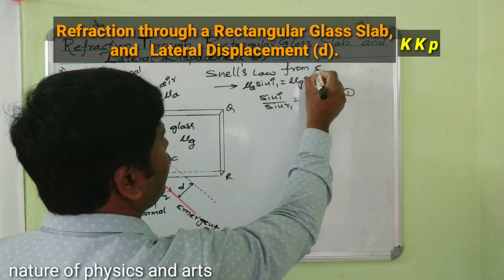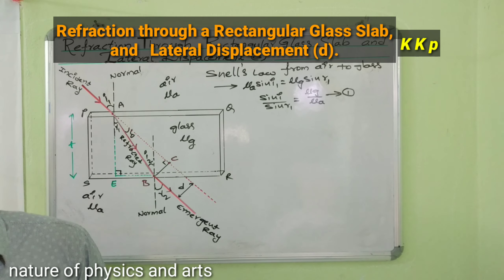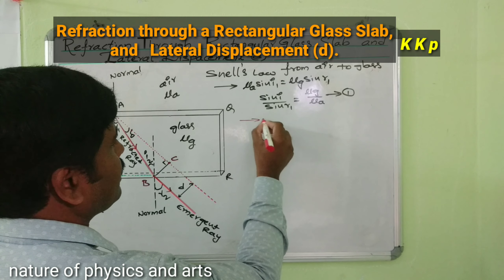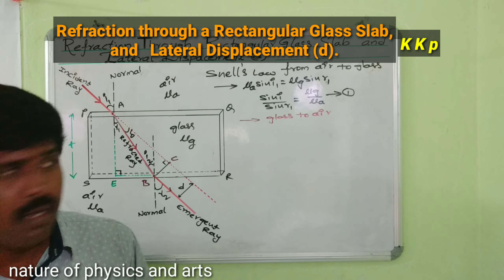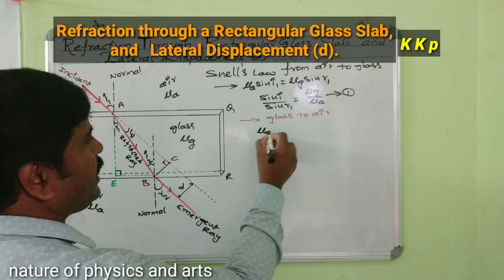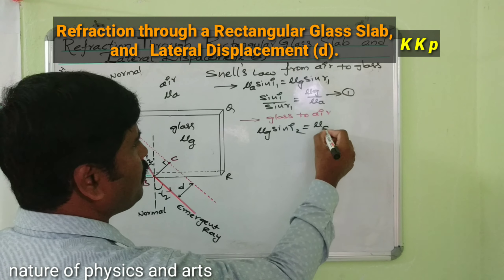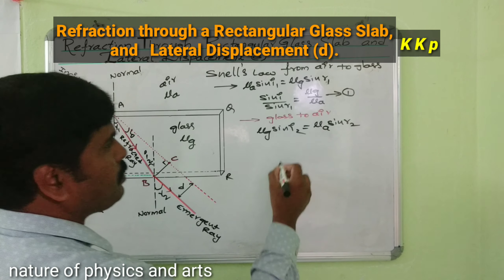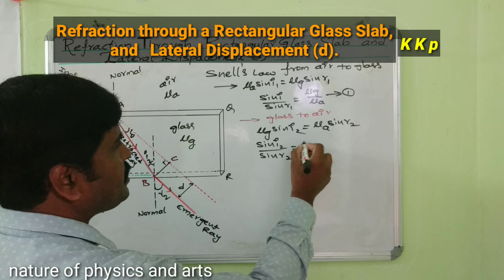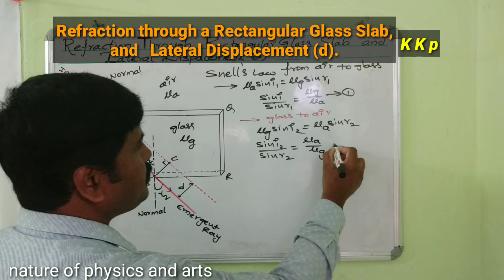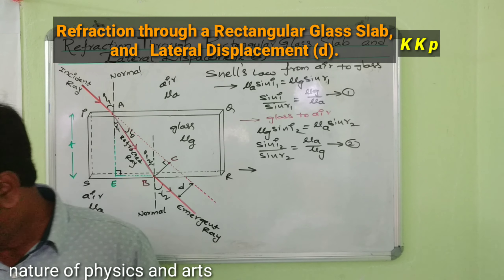Now applying Snell's law from glass to air: mu_G · sin(i2) = mu_A · sin(r2). Rearranging: sin(i2) / sin(r2) = mu_A / mu_G. This is equation 2.